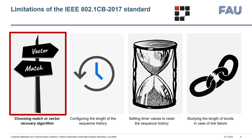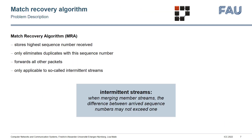We start with choosing the right recovery algorithm. For each of the four limitations we will present, we will first introduce the problem, then present our theoretical results, and conclude with simulation results. FRER has two algorithms to identify duplicated packets. The simpler algorithm is called the match recovery algorithm. It always stores the highest sequence number received and eliminates only duplicate packets with this sequence number; all other packets are forwarded. This algorithm is only applicable to so-called intermittent streams.